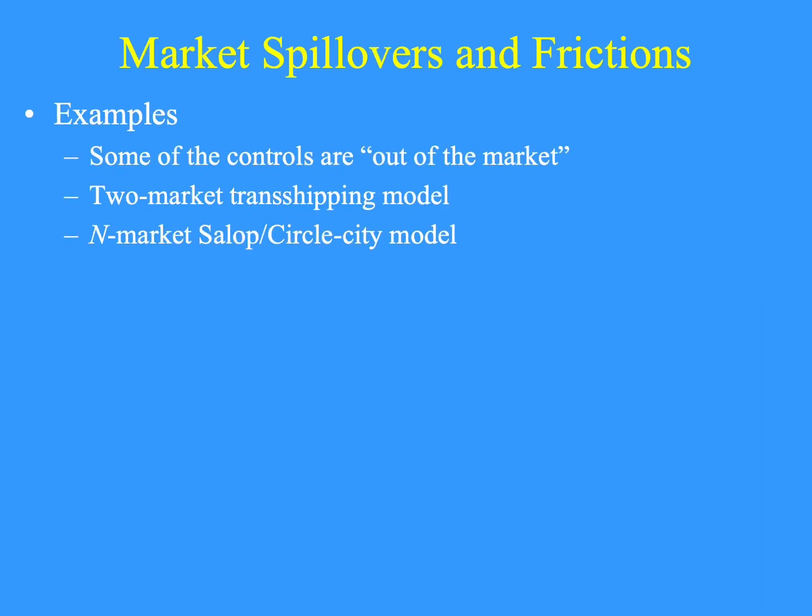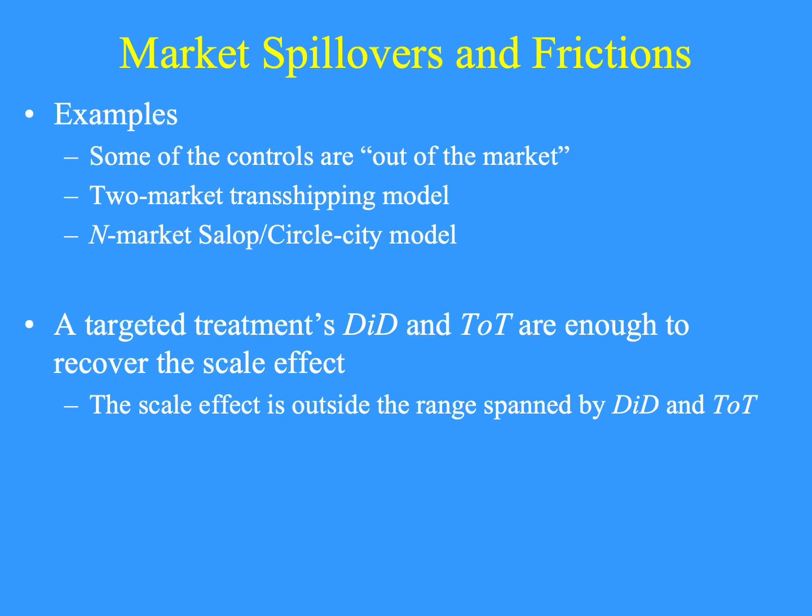Difference-in-differences estimators will always include a treatment-control substitution effect, but with market frictions they can also include a bit of the scale effect. Understanding those frictions allows inferring the part that is scale. This is a non-exhaustive list of approaches to market frictions: one is to say that some of the controls are out of the market; the second is to put a porous barrier between two markets so their prices are linked but imperfectly; a third is the Salop or Circle City model where market spillovers diminish with distance. In all of these cases, a targeted treatment's DID and TOT are enough to recover the scale effect.